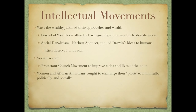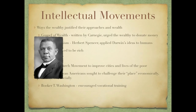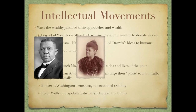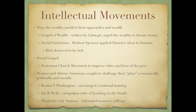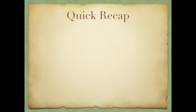Women and African Americans during this time began to challenge their place economically, politically, and socially. You have Booker T. Washington, who encouraged vocational training for African Americans; Ida B. Wells, an outspoken critic of lynching in the South; and Elizabeth Cady Stanton, who advocated for women's suffrage.